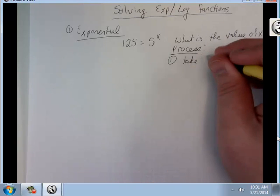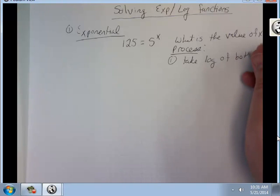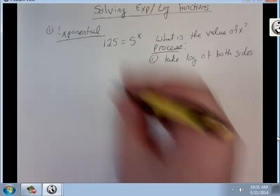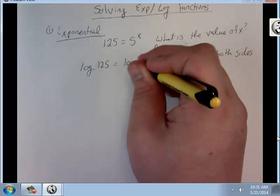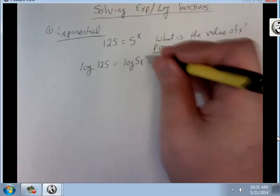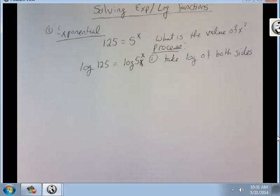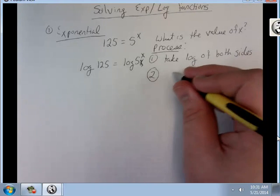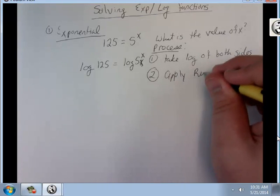First, take log of both sides. So, that means I get log 125 equals log 5 to the x. Now, apply rule number 3.